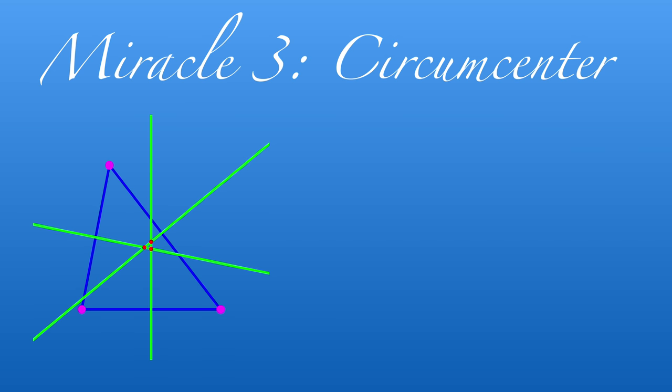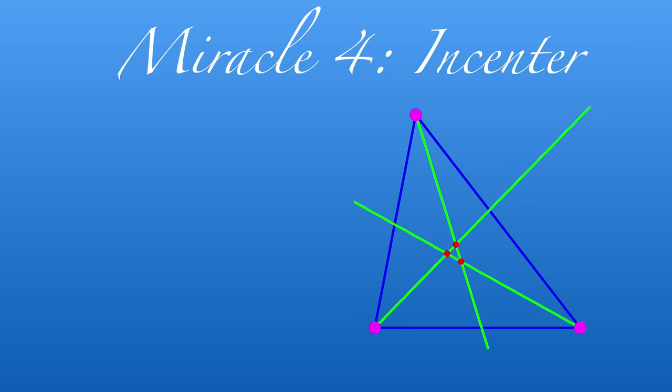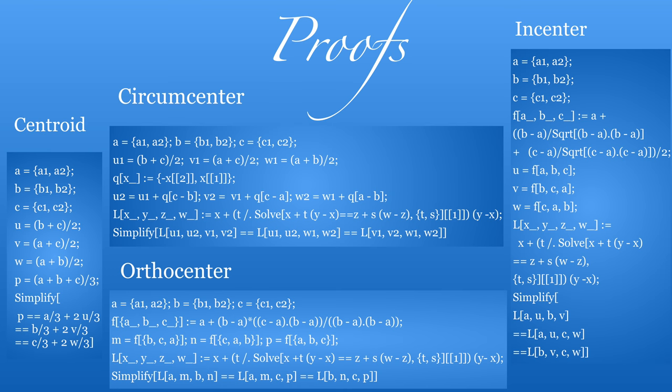The third miracle appears if we intersect the perpendicular bisectors of the three sides in a triangle. Again, this intersects in a point. The last surprise comes when we look at the angle bisectors in a triangle. Again, they intersect in a common point. Here are computer assisted proofs. You can just run these lines with Mathematica and you get in each case a verification that the proof works.